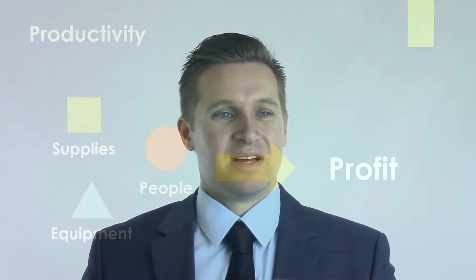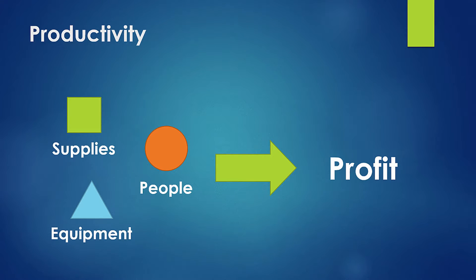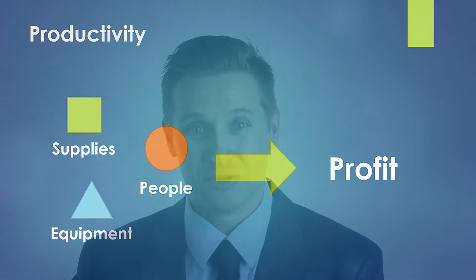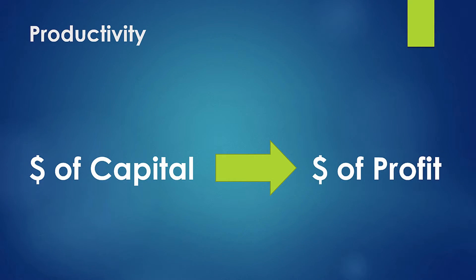Let's use an example. Let's say you have a company and you have a bunch of stuff — supplies, people, equipment — and you use all of these things to generate value or profit. You can take all of these items, turn them into a dollar value, and say: for a certain dollar amount of capital, I was able to generate a certain dollar amount of profit or value. This is your productivity ratio — the dollar value created divided by the dollar value of assets it took to create that value.